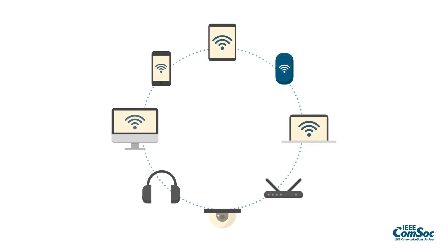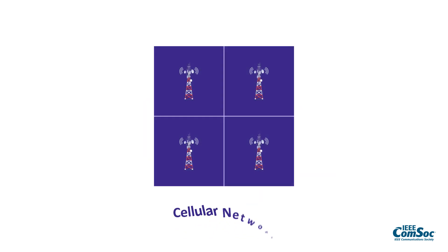In wireless communication, the classical architecture is the cellular network, where we deploy a number of base stations and each user is associated with one of them to get their service. That divides the world into cells — the areas where you are served by a particular base station.